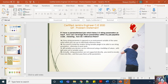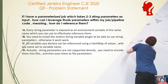Welcome back to the CJE 2020 certification catalyst program. This is question 9. If I have a parameterized job which takes two to three string parameters as input, how can I leverage those parameters within my job or pipeline code — meaning how do I reference them? You have string inputs, and how do you use them? The reason you are passing parameters is that you will need to use those parameter values somewhere.